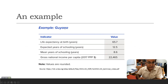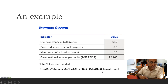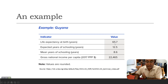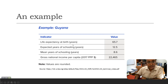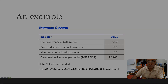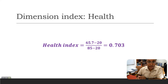Let's take an example. I have taken Guyana from the HDR Technical Notes 2021-22 — the link is available for you to check yourself. The actual values for Guyana are: life expectancy at birth is 65.7 years, expected years of schooling is 12.5 years, mean years of schooling is 8.6 years, and gross national income per capita is 22,465.